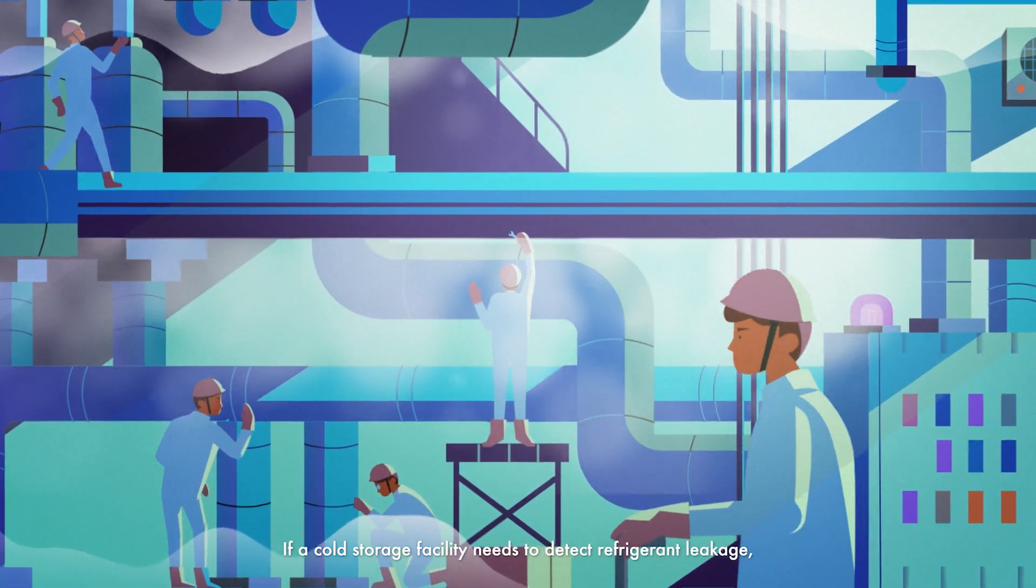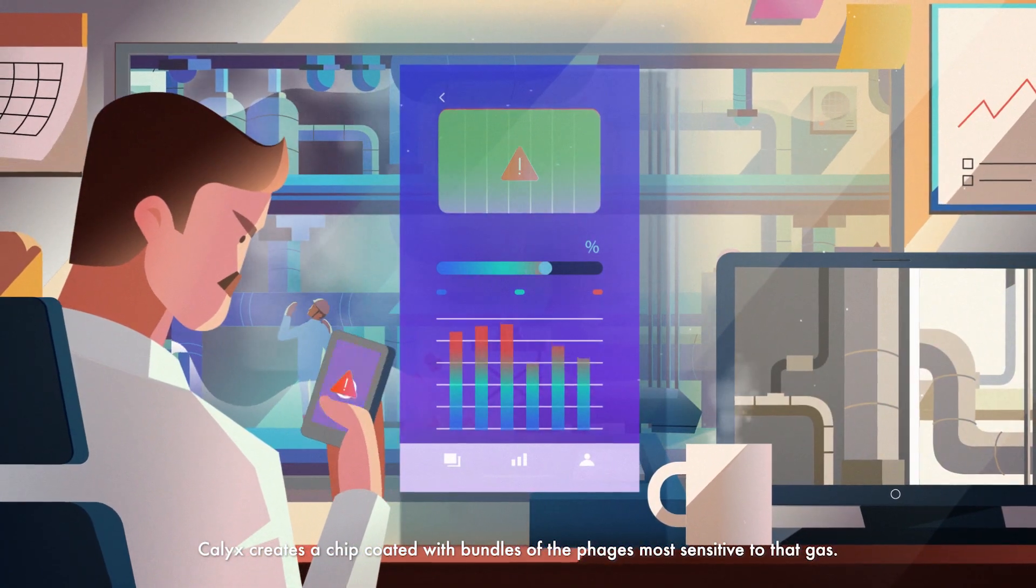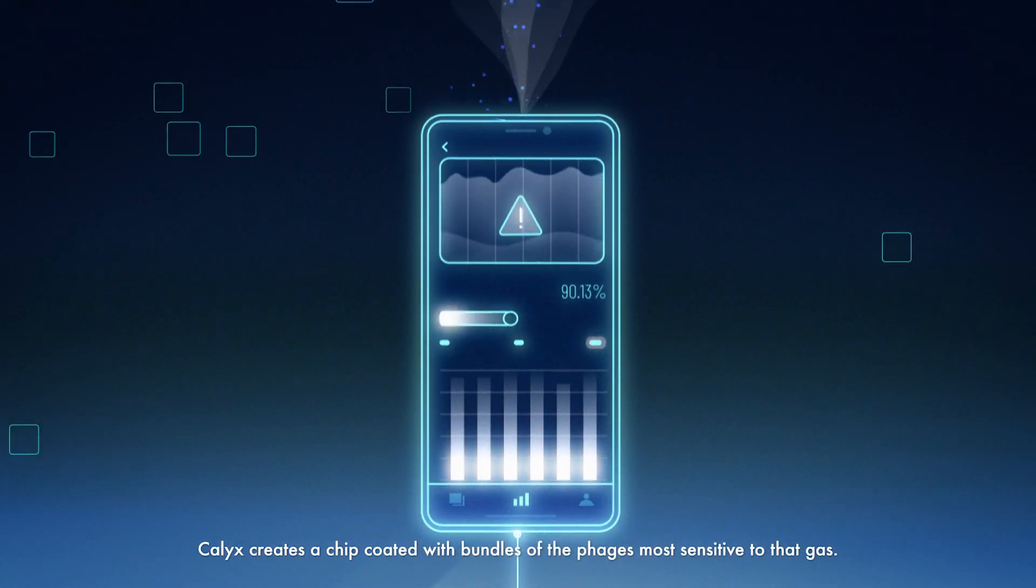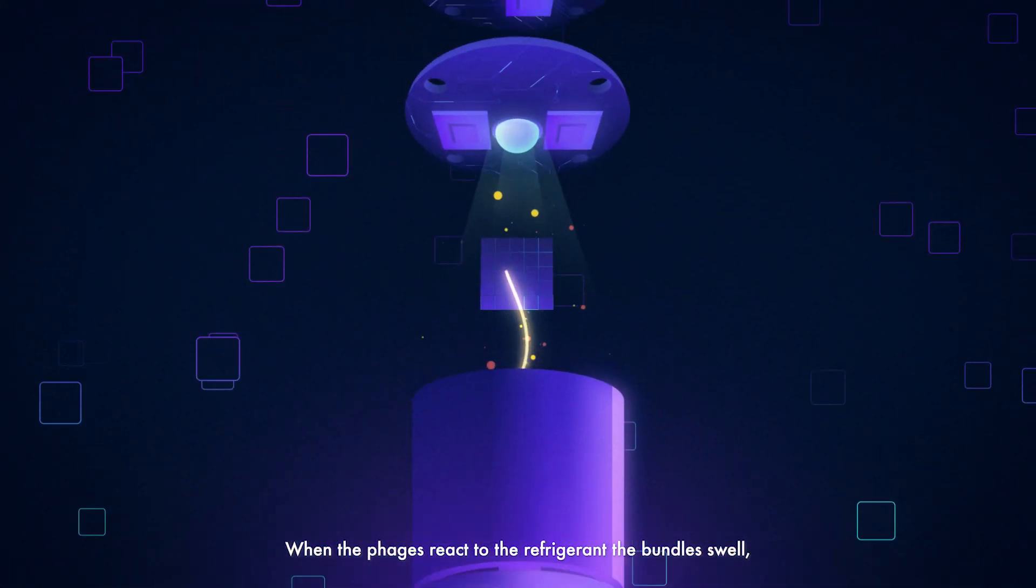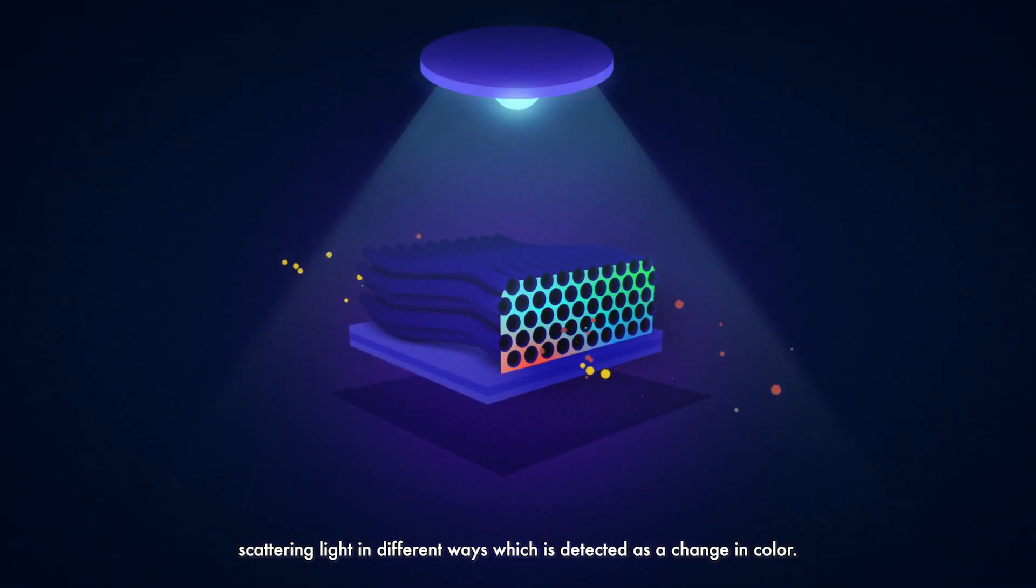If a cold storage facility needs to detect refrigerant leakage, Calyx creates a chip coated with bundles of the phages most sensitive to that gas. When the phages react to the refrigerant, the bundles swell, scattering light in different ways, which is detected as a change in color.